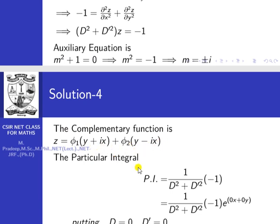The complementary function is z = φ₁(y + ix) + φ₂(y − ix). No need to find the particular solution at this stage. From this, the solution — the extremal of the given problem — is of the form z = φ₁(some function) + φ₂(some function), where φ₁ and φ₂ should be continuous functions with constants α₁ and α₂.